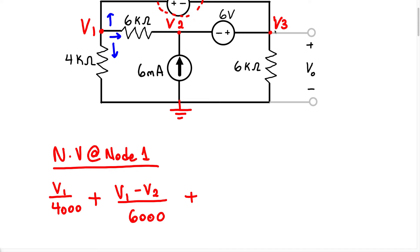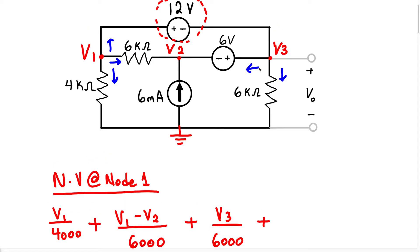For node 3, we assume the current flows in this direction and in this direction. We can write V3 over 6,000 plus the current in this direction. But once again, we have a voltage source in between two essential nodes. We don't know the voltage at node 3, and we don't know the voltage at node 2. Therefore, we're going to take this as a super node as well.